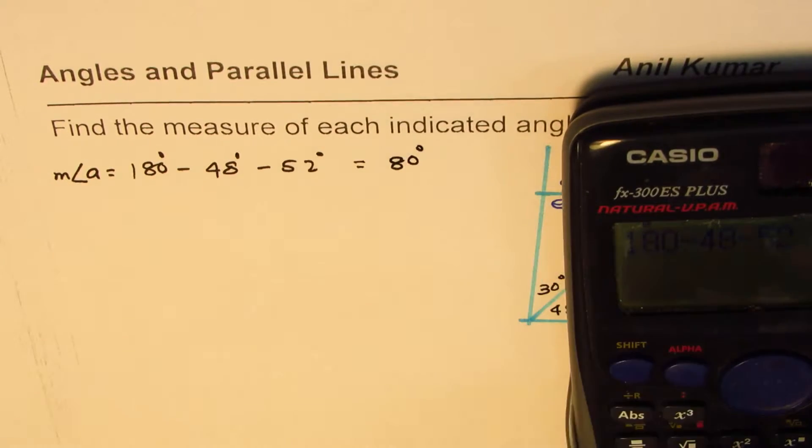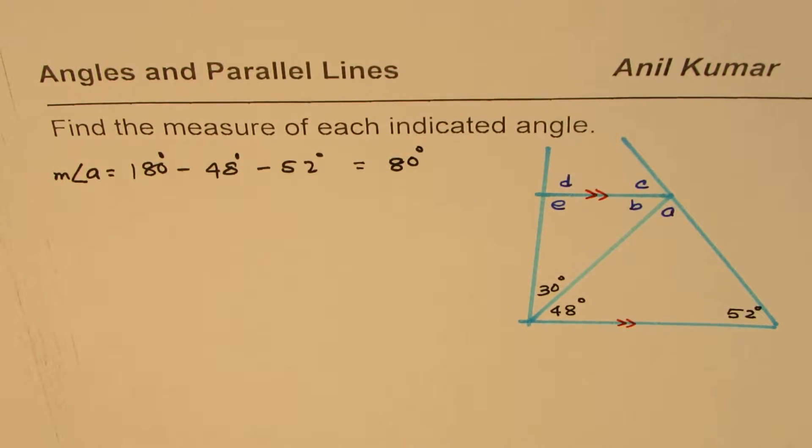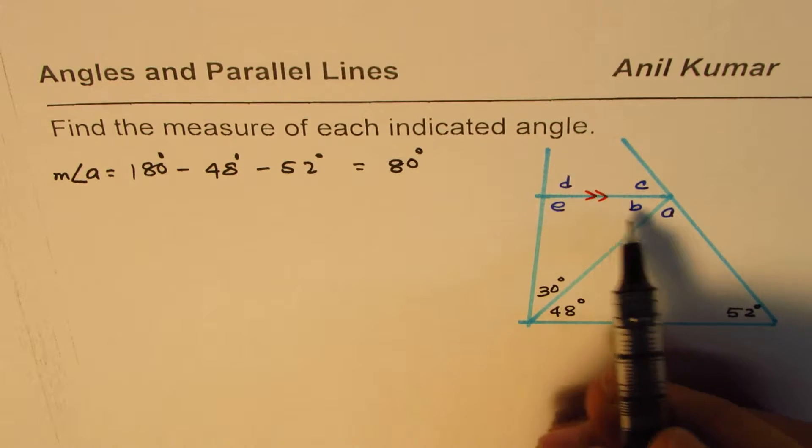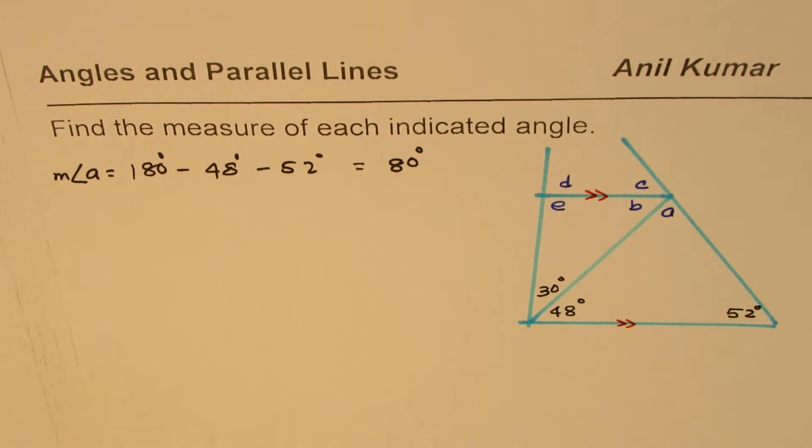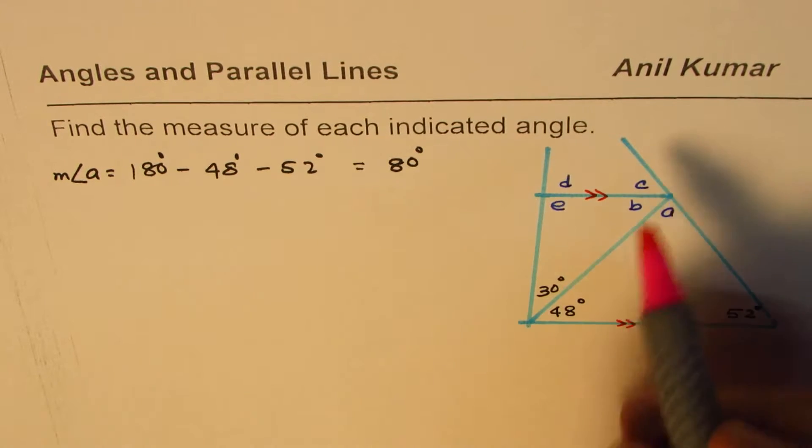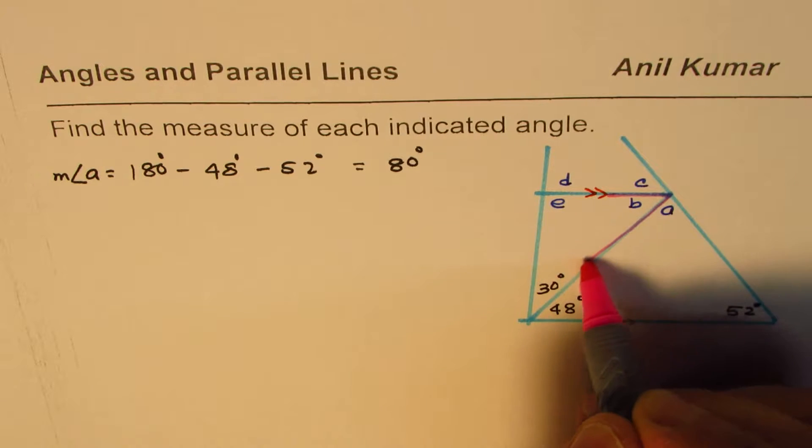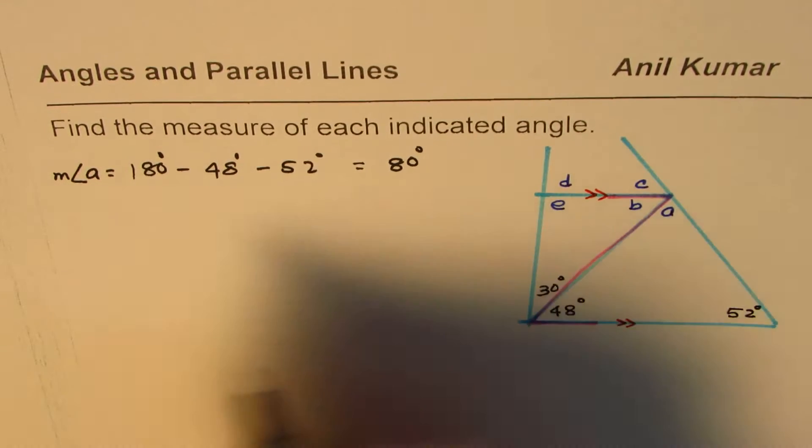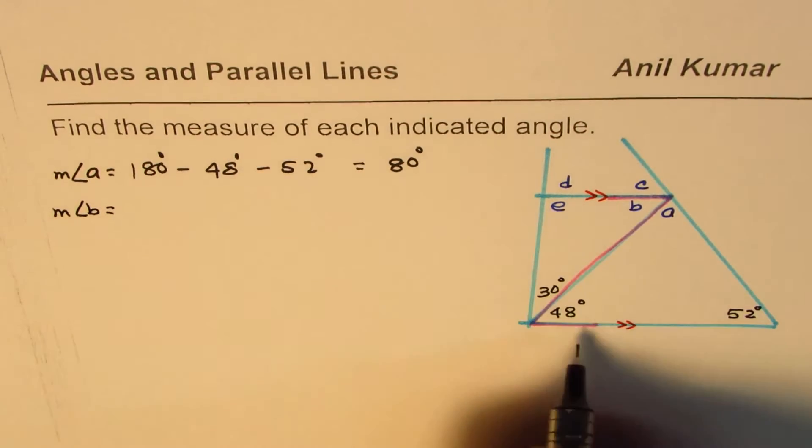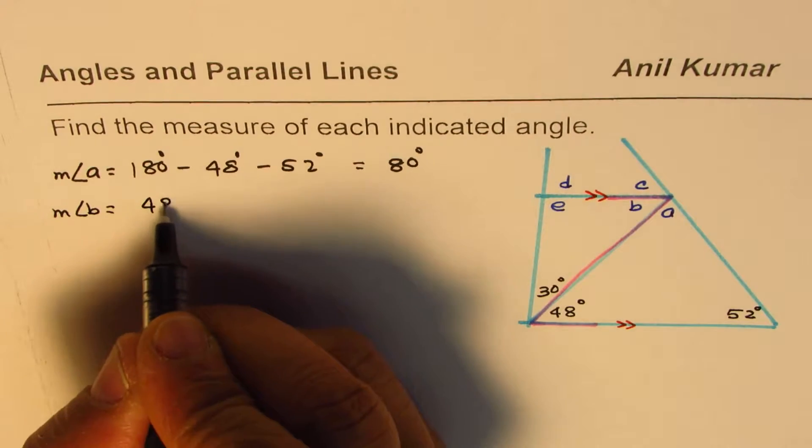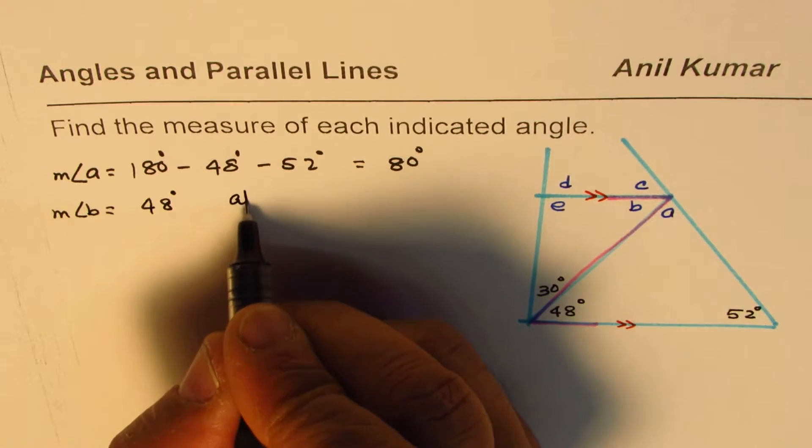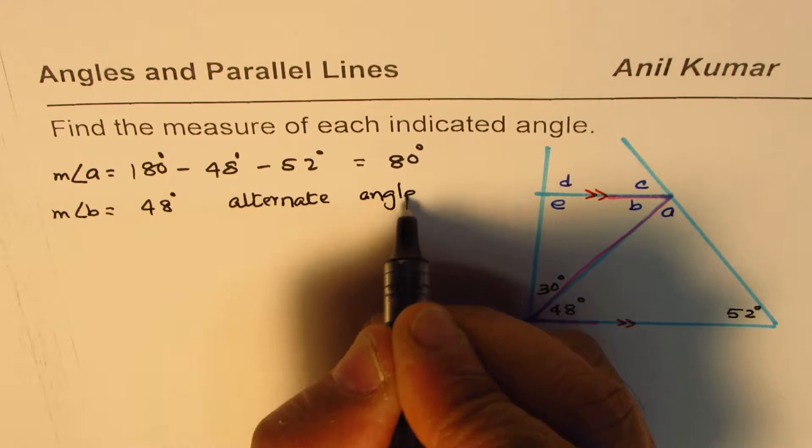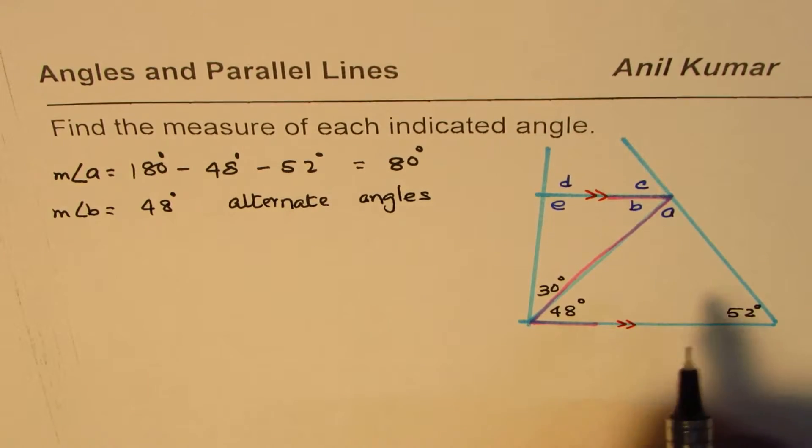Now how will you find angle B? Angle B is an alternate angle. It gives you a Z pattern, right? So this is a Z pattern. These are parallel lines, so you can straight away read measurement of angle B as equals to 48 degrees since these are alternate angles.